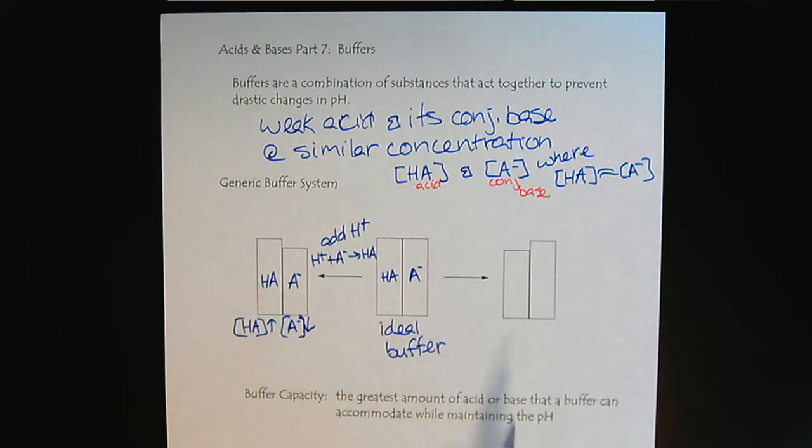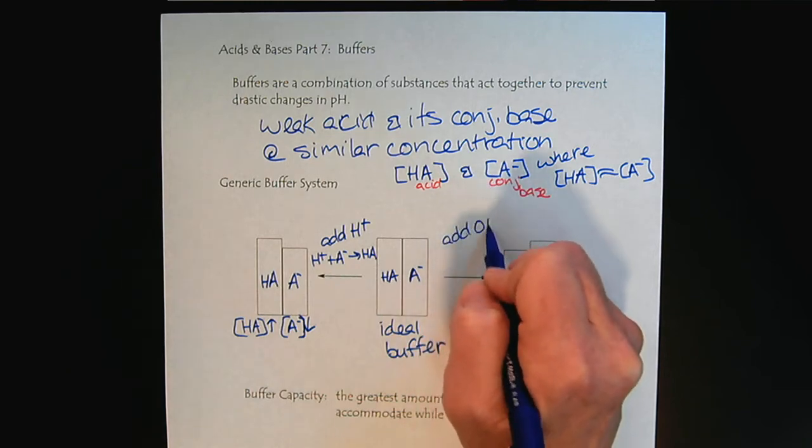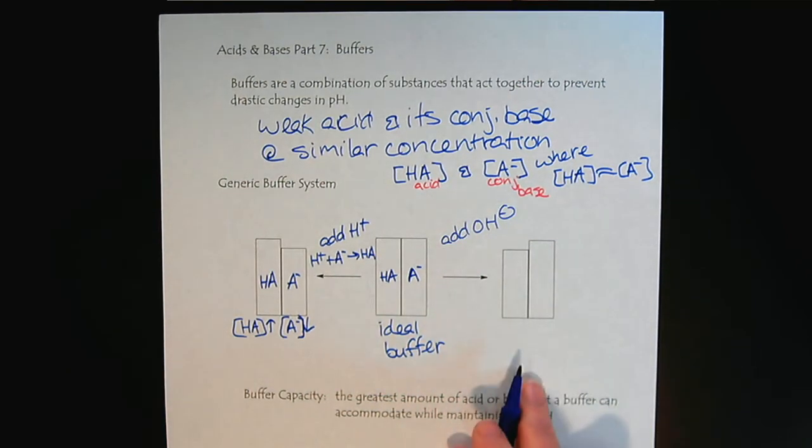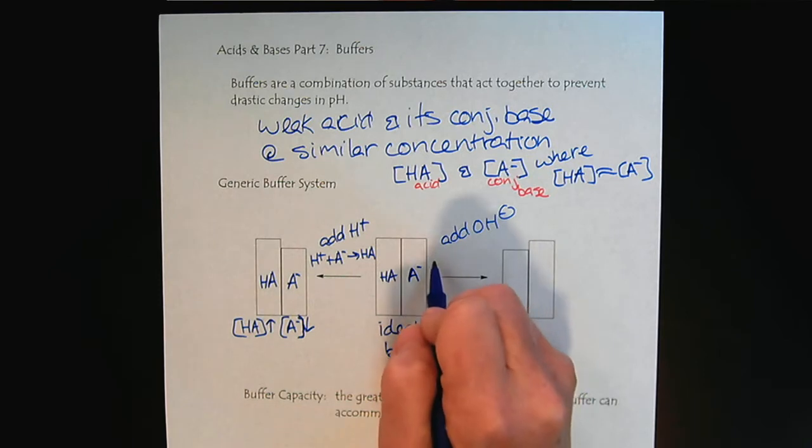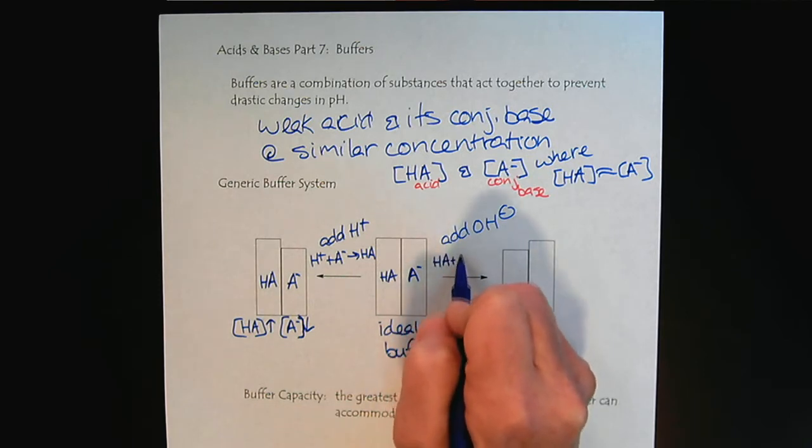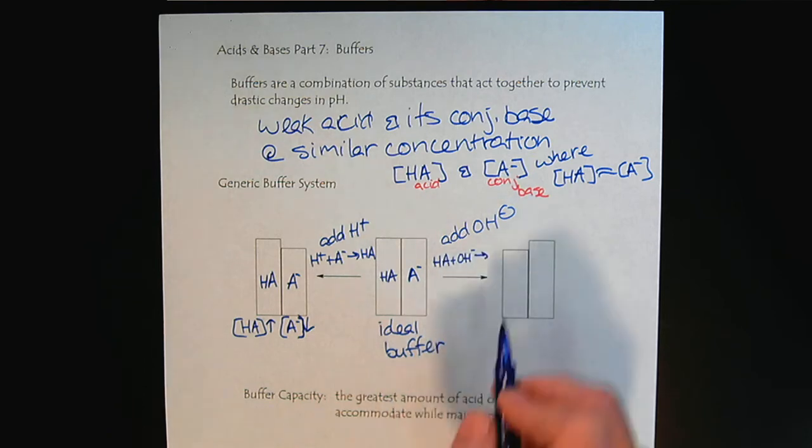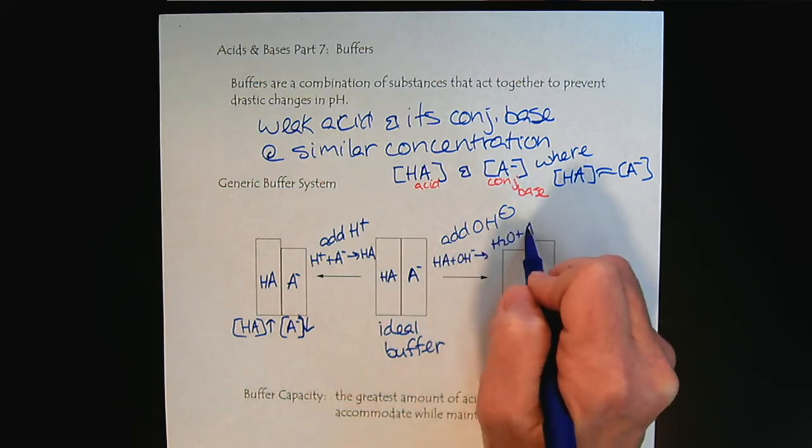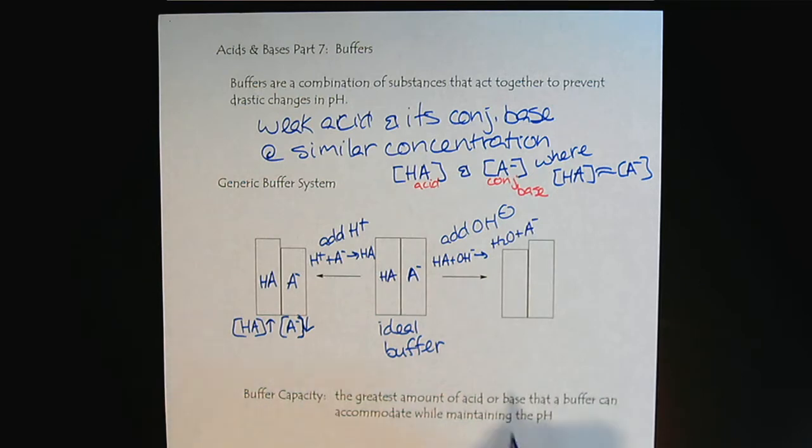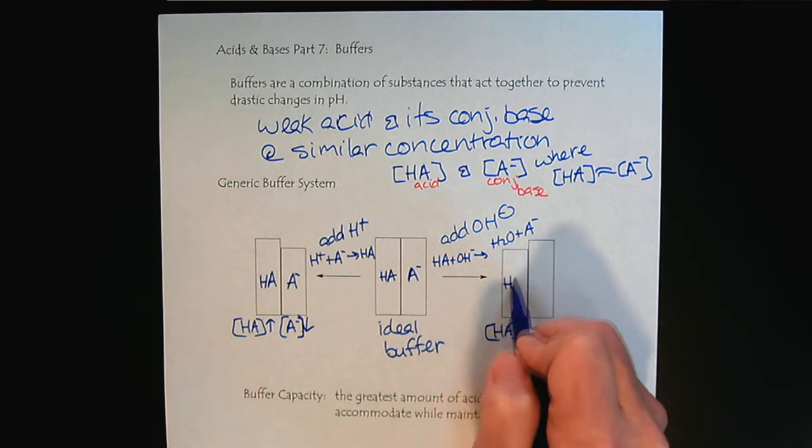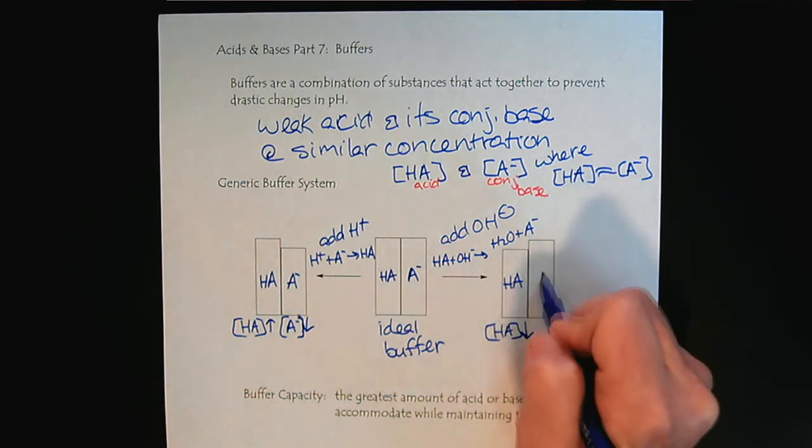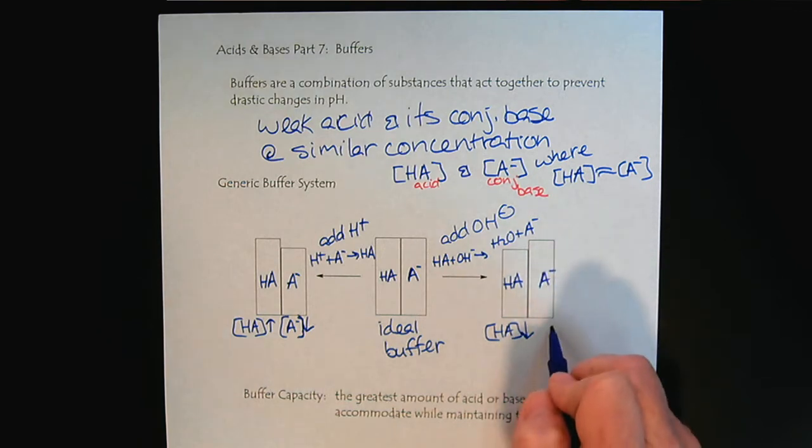Now, what happens if we add hydroxide to our buffer system? The hydroxide is going to react with the weak acid and that's going to produce water plus A-minus. So we'll see that our HA concentration decreases. We're going to lose some of our weak acid and we're going to produce some additional conjugate base.